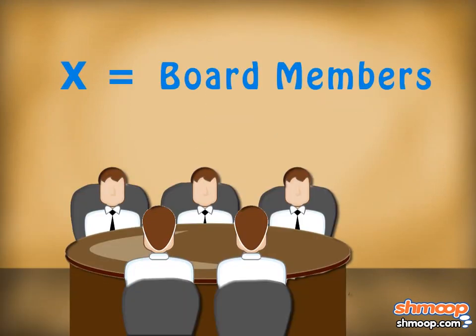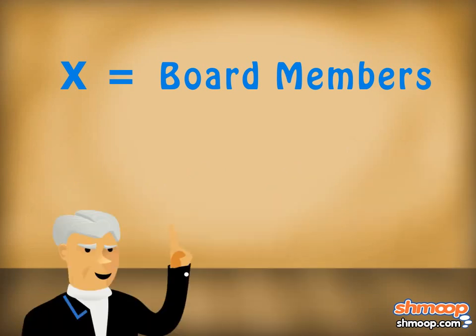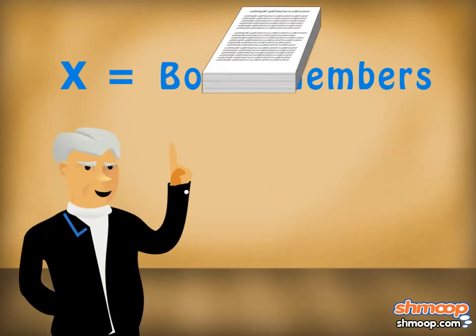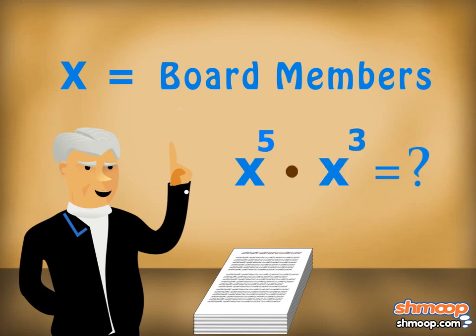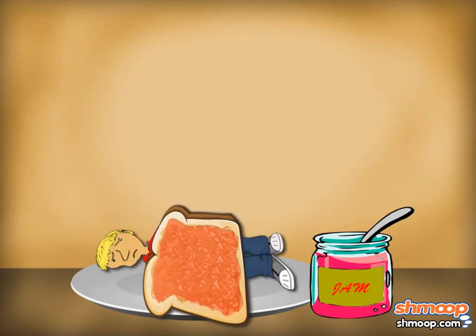X number of board members are attending the fancy meeting. The boss, never one to make things easy, wants enough handouts for each of the board members to the power of 5, multiplied by the number of board members to the power of 3. Shelton's sure in a jam.